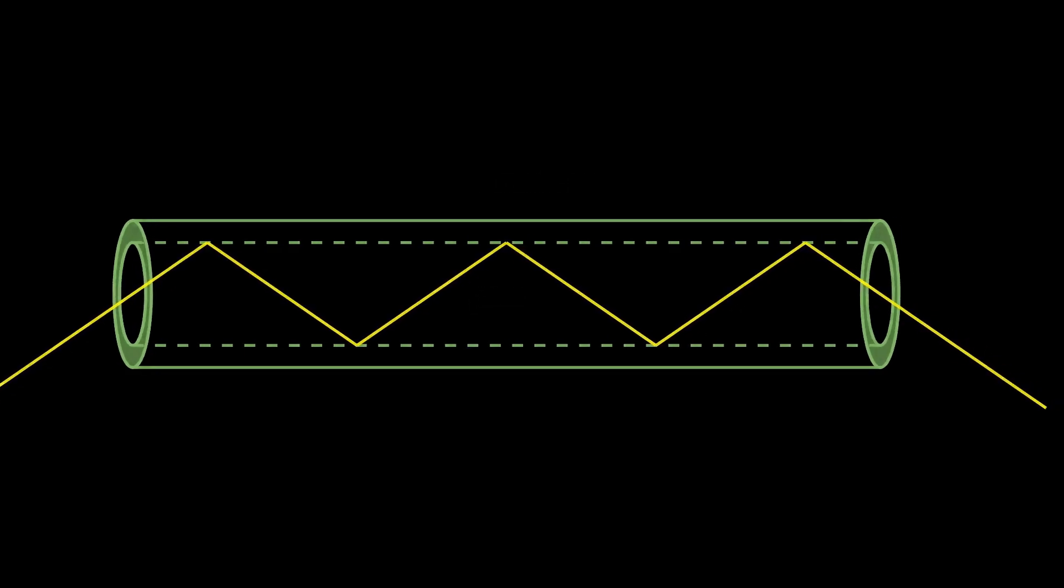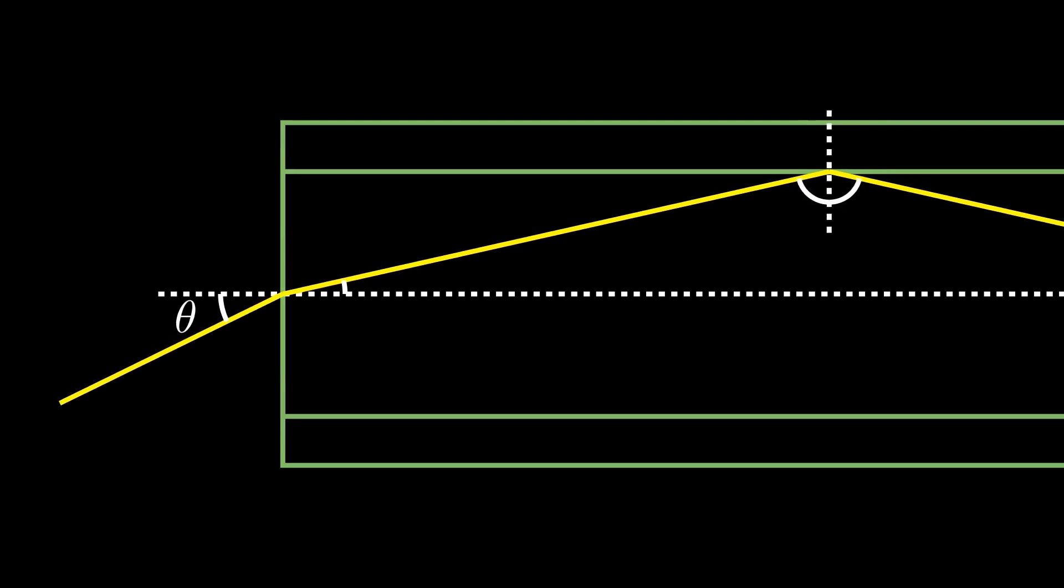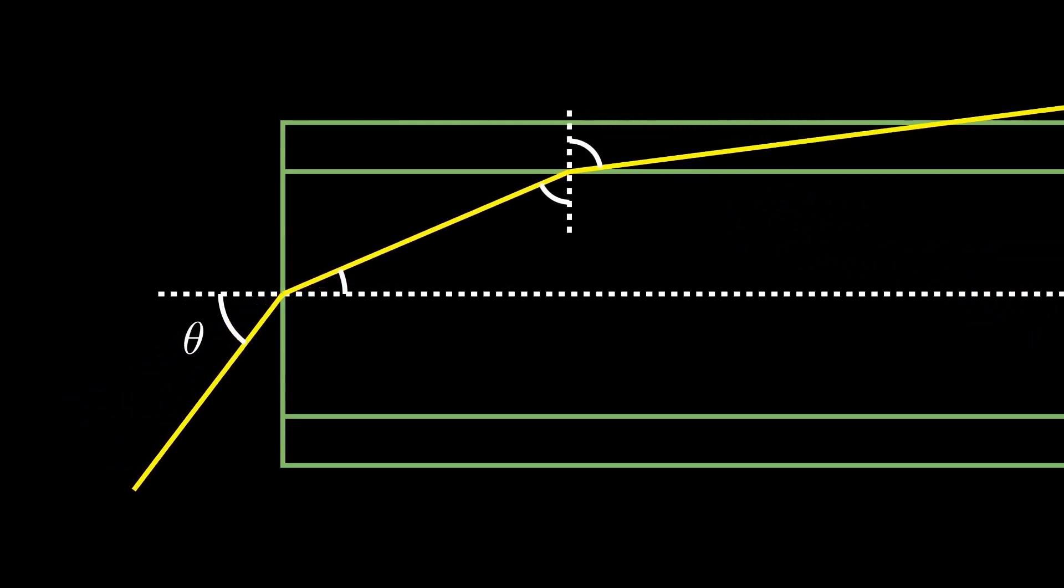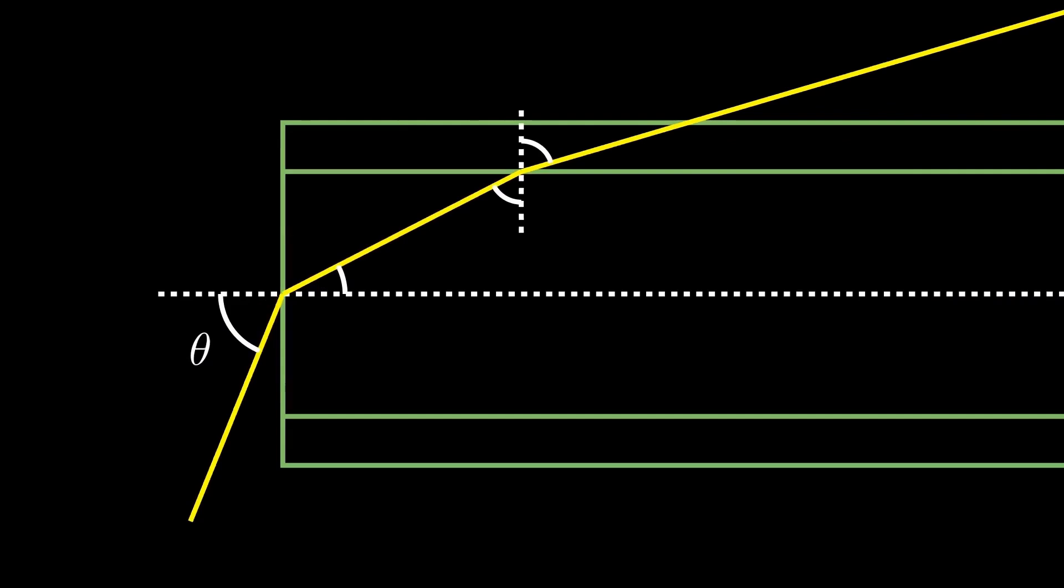Let's zoom in on a 2D cross-section of this cable. Whenever the ray of light hits the outer cladding, it undergoes total internal reflection. However, sometimes, instead of reflecting, the light will refract out of the cable entirely, causing some valuable data to be lost.